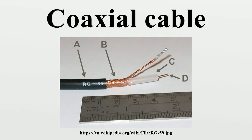In coaxial cable, the dominant mode is the TEM mode, which has a cut-off frequency of zero — it propagates all the way down to DC. The mode with the next lowest cut-off is the TE11 mode, which has one wave going around the circumference of the cable. To a good approximation, the condition for the TE11 mode to propagate is that the wavelength in the dielectric is no longer than the average circumference of the insulator. Hence, the cable is single mode from DC up to this frequency, and might in practice be used up to 90% of this frequency.